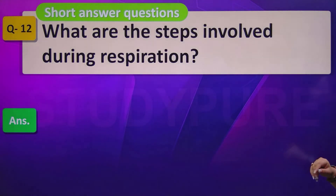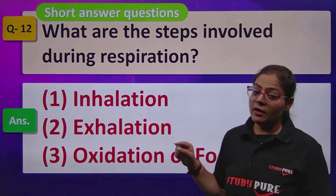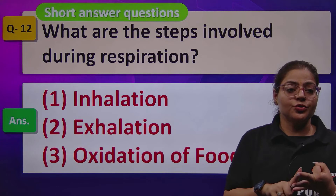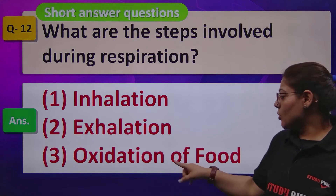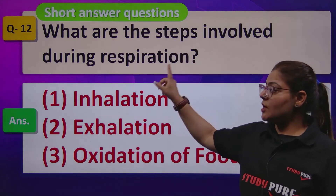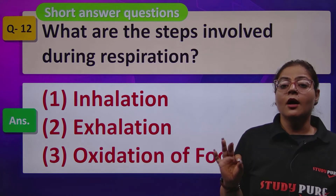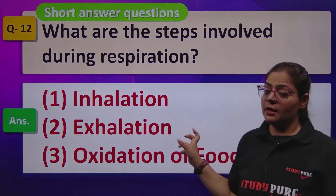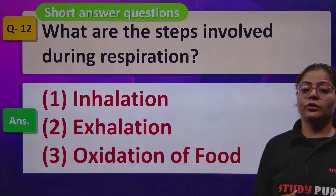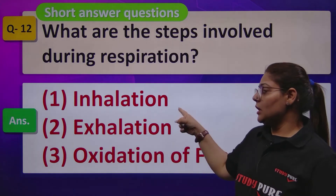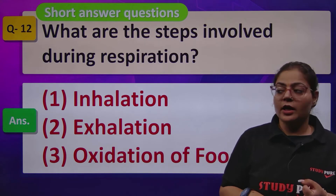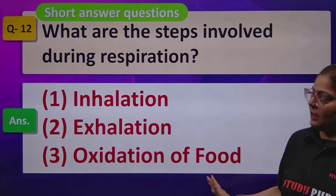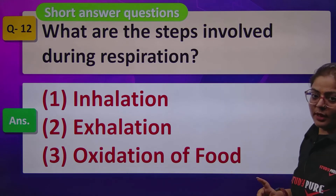What are the steps involved during respiration? You need to state the steps in which energy, carbon dioxide, and water are formed. The first step is inhalation, the second step is exhalation, and the third is oxidation of food. Since this is a short answer question, we just listed them briefly. But when it comes in long answer or 3-mark format, it is very important to draw the diagram showing movement of the diaphragm and lungs during inhalation and exhalation.